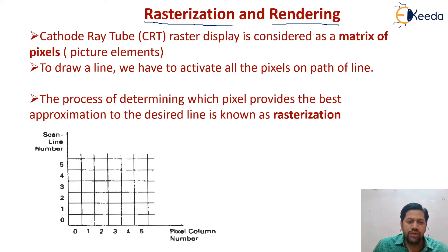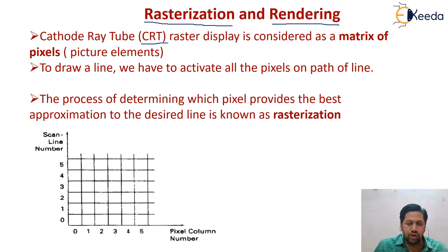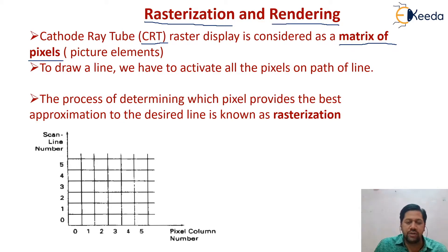For every raster scan display we are using the cathode ray tube, generally called the CRT monitor. On the CRT monitor we display our picture or image on the screen. It is based on TV technology and our complete screen is considered as a matrix of pixels. For example, if we have a resolution of 640 by 480, we have that many number of points on the screen.